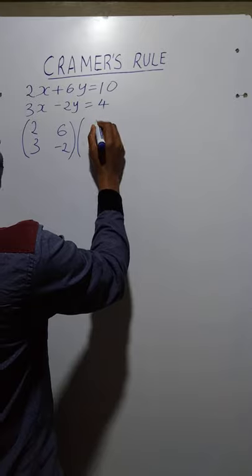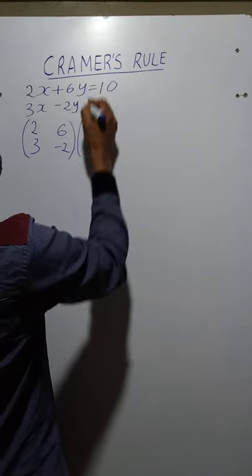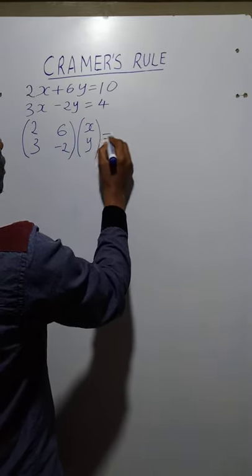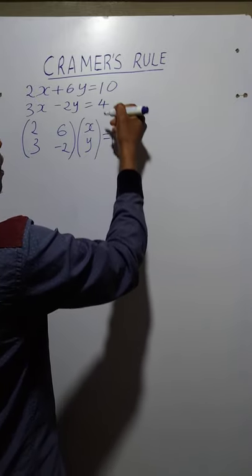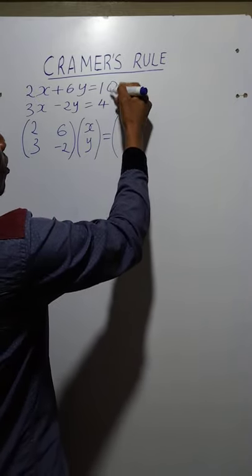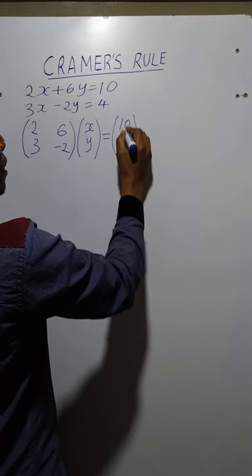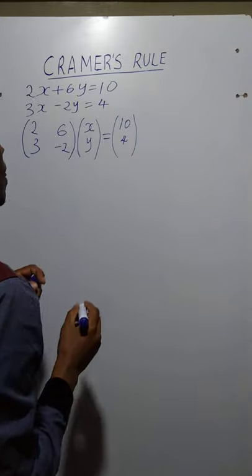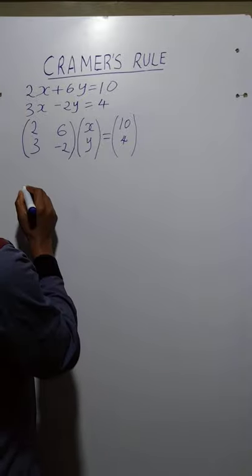The second matrix will represent the unknowns x and y, written as a column. It is equal to the last matrix, which will represent the answers of the equations: 10 and 4, as indicated.